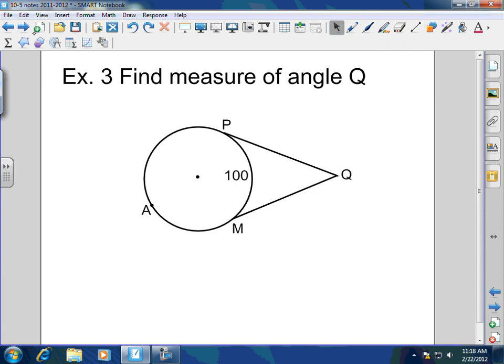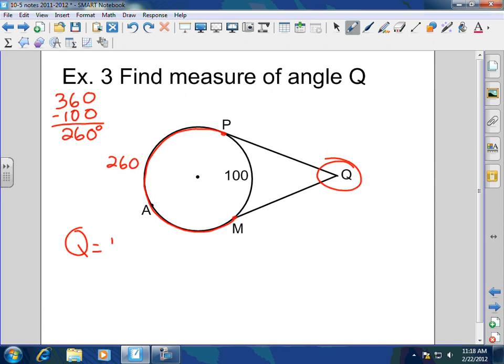How about this one right here? How would I find the measure for angle Q here? Before we find angle Q, what do we first have to find? What are we missing here? Major arc. The major arc. The major arc P-A-M. And what would that major arc be, my man? 260. Absolutely, because 360 minus the given arc gives you a remaining arc of 260. So angle Q would equal one-half of 260 minus 100, which would give you 80 degrees. It's making sense, y'all? Pretty simple, right? Awesome.